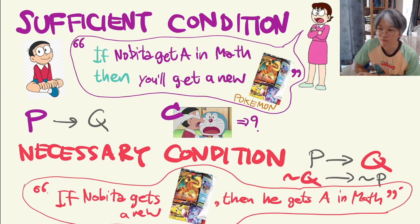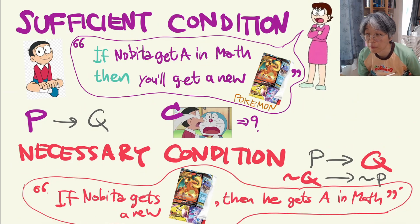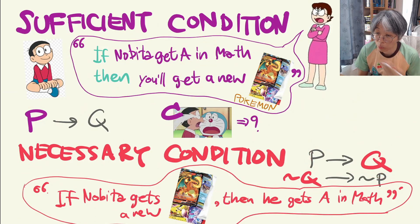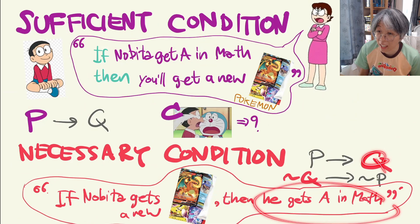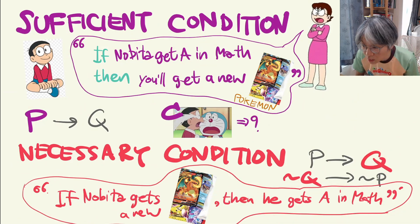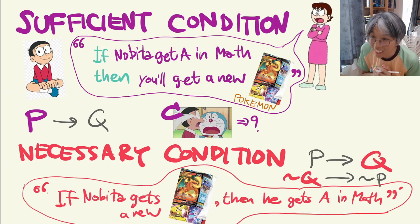Now let's take a look at another statement. If someone says: if Nobita gets a new card, then he gets an A in math. Again this is expressed as P then Q, but now P is the statement that Nobita gets a new card, and Q is the statement that he gets an A in math. If you see Nobita get a new card, you can immediately conclude that he must have gotten an A in math.